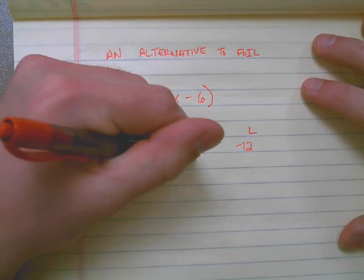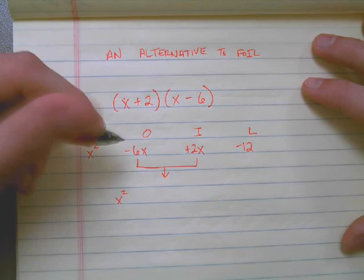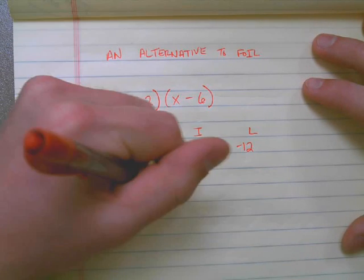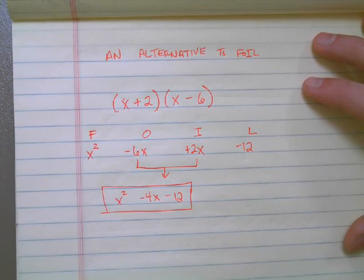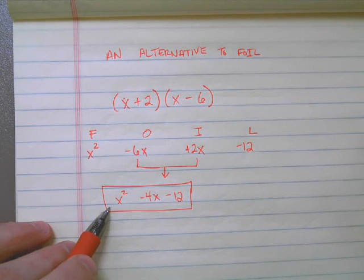Then I see that I have x's here, so I could combine these. x² minus 6x plus 2x gives me a total of -4x, and then minus 12. So I could rewrite (x + 2)(x - 6) as x² - 4x - 12.